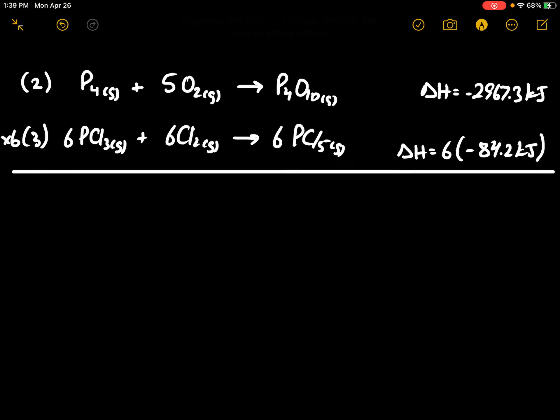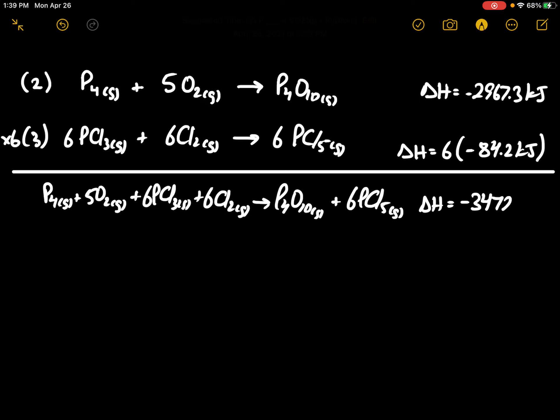And combining these two together, we will get, nothing cancelling: P4, 5O2, 6PCl3, 6Cl2, P4O10, 6PCl5. Delta H which here would work out to be negative 3,472.5 kilojoules.